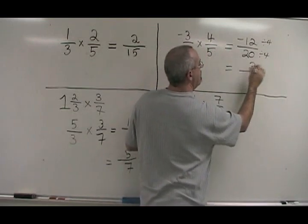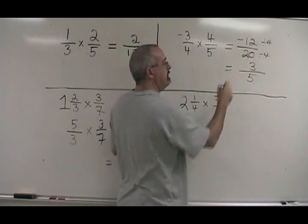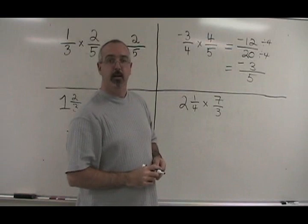12 divided by 4 is 3. 20 divided by 4 is 5. So negative 3 over 5 is our answer.